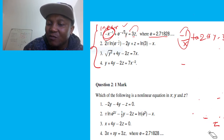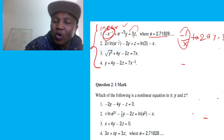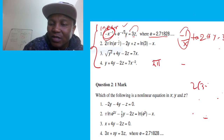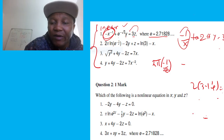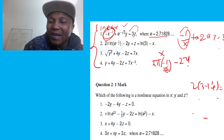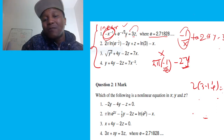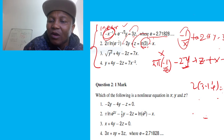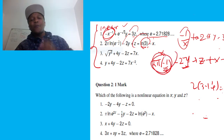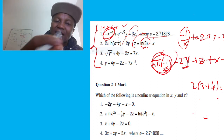Since we have −1/z in the second equation, it cannot be linear — a linear equation cannot have a variable in the denominator. So the second equation is also non-linear. Even though 2π is just a number (approximately 6.28), that −1/z term ruins everything and makes the equation non-linear.